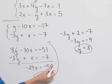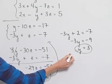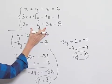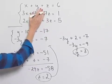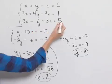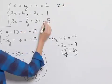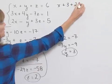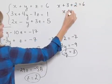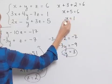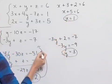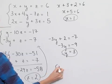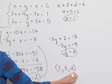Now we know z is two and y is three. We take those values and substitute back into one of the equations in our three equation, three unknown system. Substituting into the very first equation: x plus three plus two equals six. So x plus five equals six, which means x equals one. So we have x equals one, y equals three, and z equals two. We can write this as an ordered triple: one, three, two as our solution.